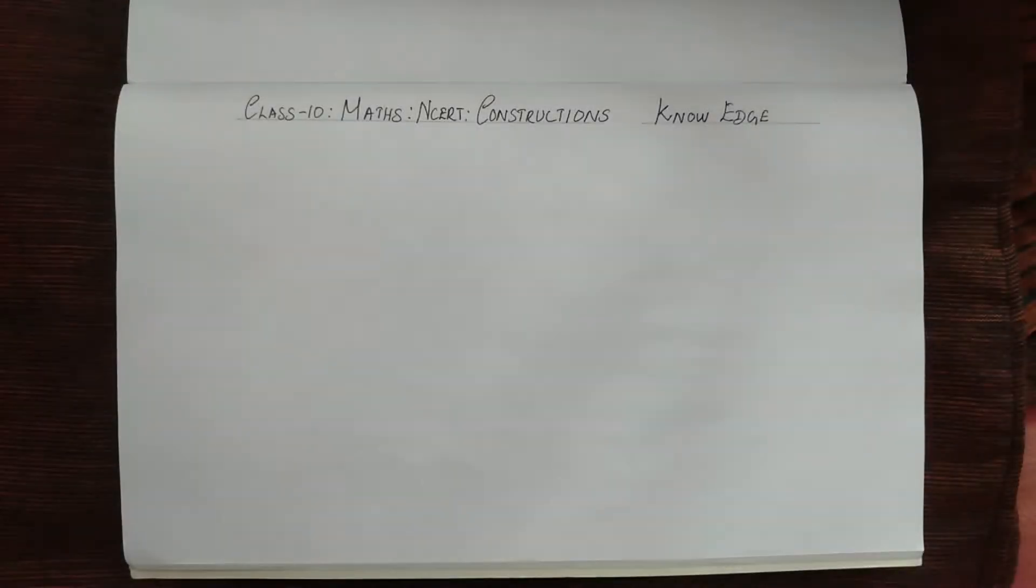Hi and welcome to Knowedge. Today we shall learn to construct two tangents to a circle from a point outside it. This is from Class 10 Maths NCERT syllabus and the chapter is Constructions.